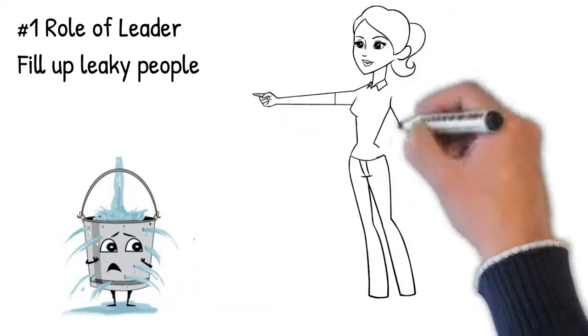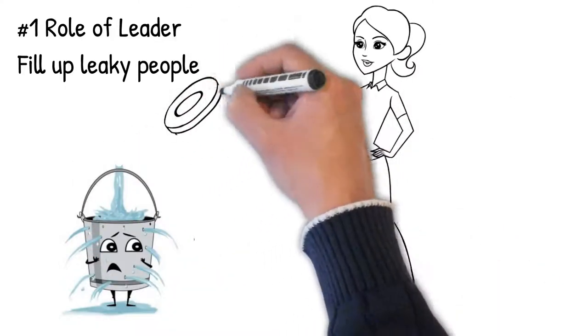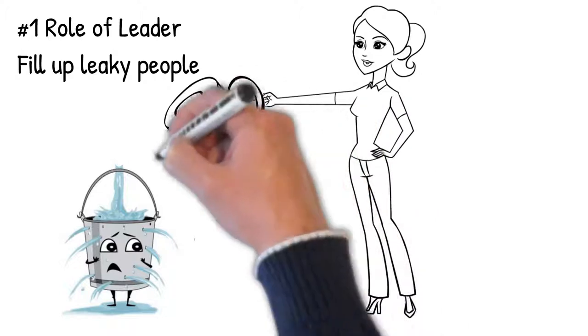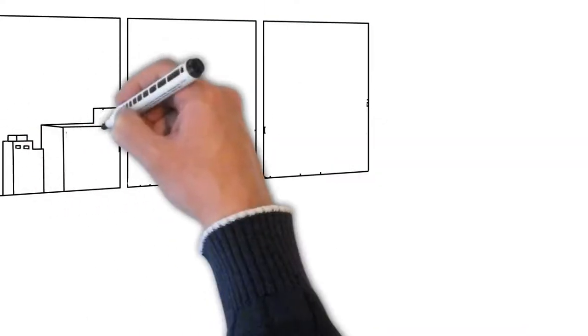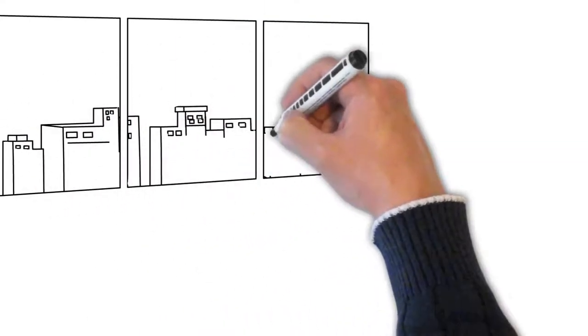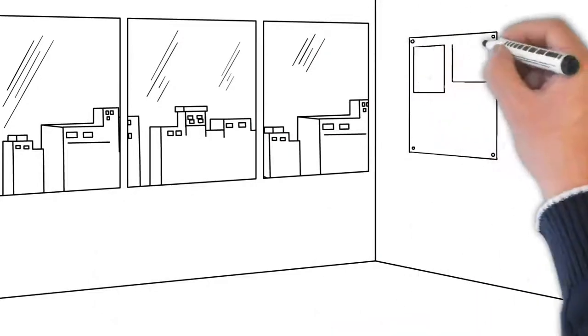The role of the leader is to fill up leaky people with vision and passion. When you do that, and if you've hired good people, they will take that vision and passion and do amazing things. If you don't do it, what you will get is mediocrity.